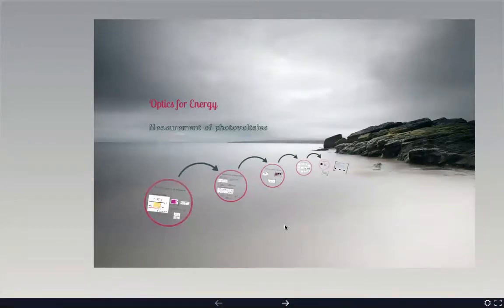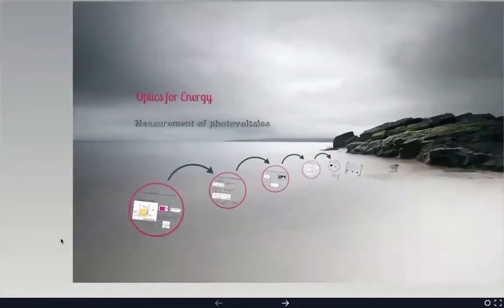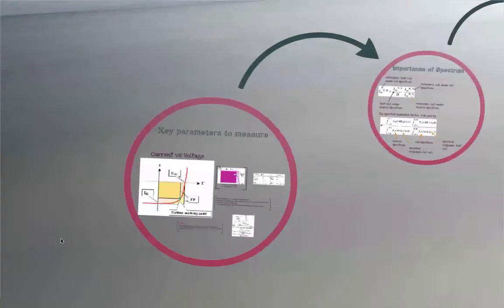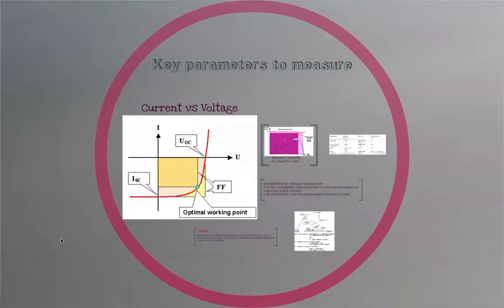Today we're going to talk about the measurement of photovoltaics — particularly solar cells. We're going to talk primarily about current-voltage measurements. This is more of a practical knowledge that you should have having taken this class, so we'll talk about some specific things that are important.